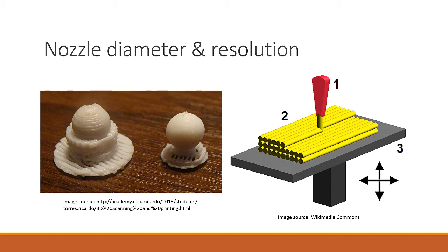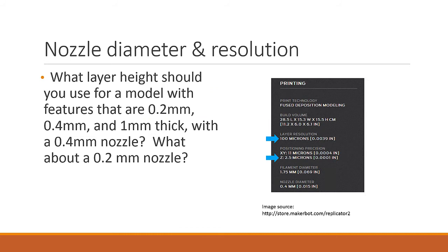This is because they selected a smaller layer height when printing the model. Printers usually come with recommended layer heights, but this is a setting you can generally change each time you print. The layer height is the height of each individual layer of plastic, or the distance the z-axis moves up each layer. Generally speaking, you want your layer height to be greater than the resolution of the z-axis and less than the nozzle width.